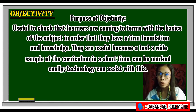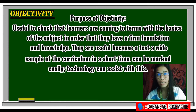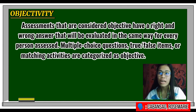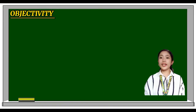The purpose of objectivity is to check that learners are coming to terms with the basics of a subject so they have a firm foundation of knowledge. Objective tests can assess a wide sample of the curriculum in a short time and can be marked easily — technology can assist with this. Assessments considered objective have right and wrong answers evaluated the same way for every person. Multiple choice questions, true-or-false items, and similar activities are categorized as objective.